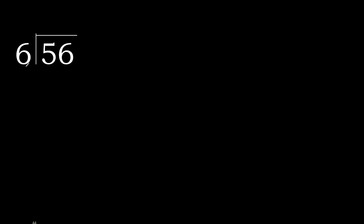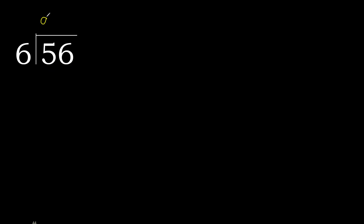56 divided by 6: 5 is less, therefore next. 56 is not less, therefore we work with 56. 6 multiplied by which number is nearest to 56 but not greater? 6 multiplied by 9 is 54, which is not greater. 56 minus 54 is 2.